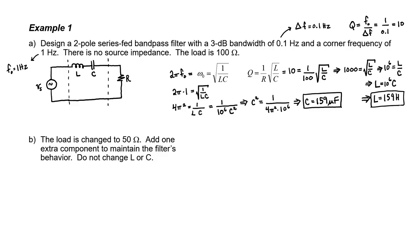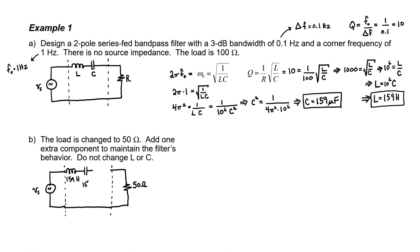Let's now see what happens if we make a small change. In part B, we're going to reduce the load to 50 ohms. If we don't do anything, the corner frequency of the filter will be okay, but the quality factor Q is going to change because R has changed. Since we're not allowed to change L and C, the simplest fix is to add a 50 ohm resistor in series with the filter. Now the entire circuit looks just like it did before — the filter still sees a 100 ohm load, just like in part A, but the actual load is still only 50 ohms.